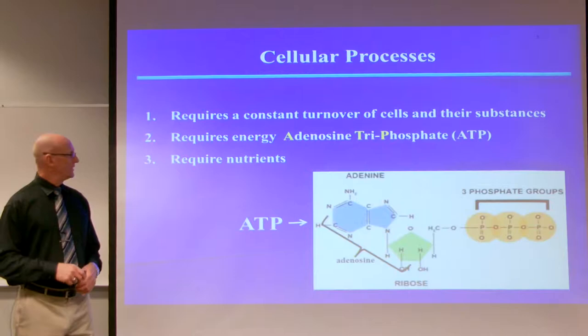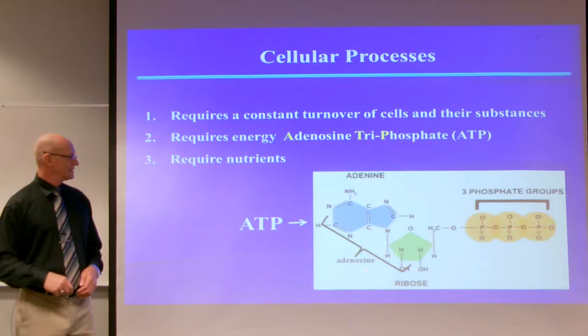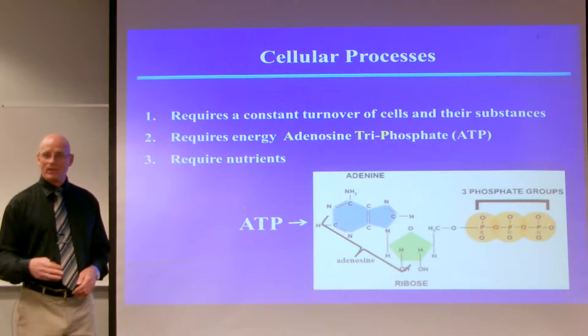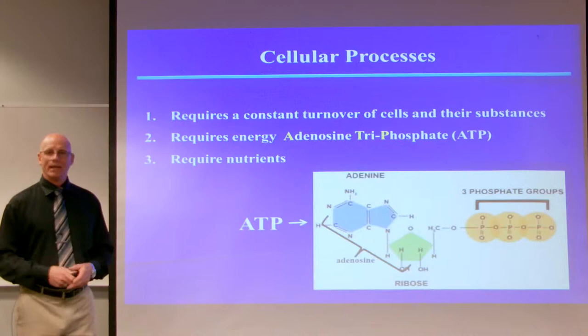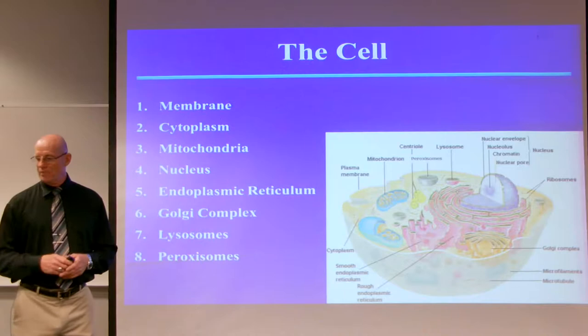ATP is adenosine triphosphate. It has a nucleotide base called adenine, a ribose sugar, and three phosphates connected to it. Adenine connected to ribose makes adenosine, and with the three phosphates, that makes adenosine triphosphate. Where we get energy is by breaking the bond on each of these phosphates — that liberates free energy.